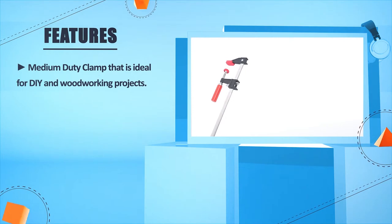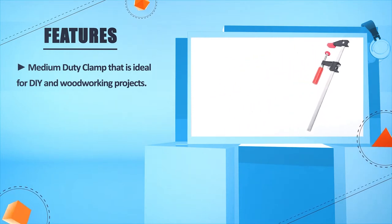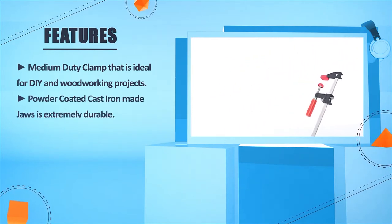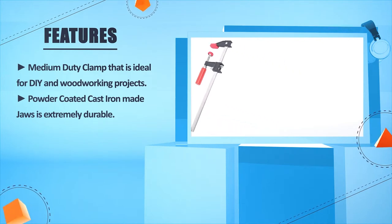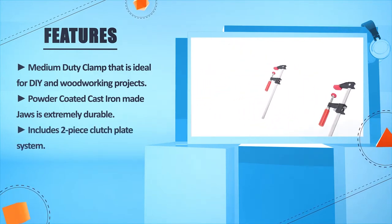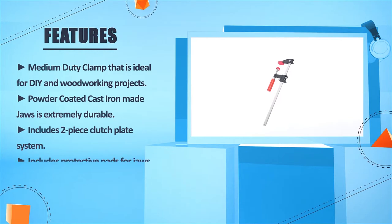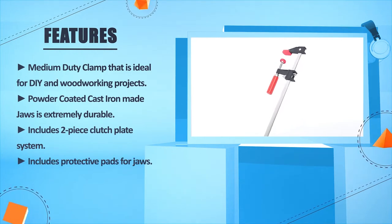Medium duty clamp that is ideal for DIY and wood working projects. Powder coated cast iron jaws are extremely durable. Includes 2 piece clutch plate system. Includes protective pads for jaws.